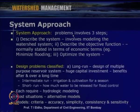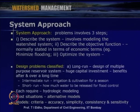If we consider conservation of mass, then inflow minus outflow equals the rate of change of storage. Like that, we can develop a particular system equation for the given watershed area. System approach problems involve three steps: first, describe the system — identify the boundaries and various features, model the watershed system, and identify the domain, boundary conditions, and other parameters.